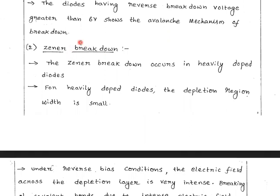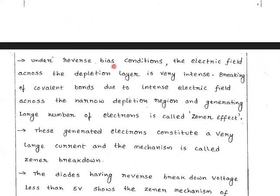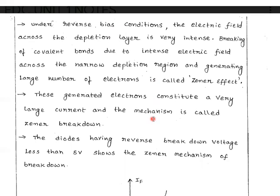Now let's look at Zener breakdown. Zener breakdown is created in diodes where the depletion region is small. If you are in a reverse biased condition, the electric field across the depletion region is very intensive. The covalent bond is broken due to this intensive electric field across the narrow depletion region, generating a large number of electrons and producing a very large current.